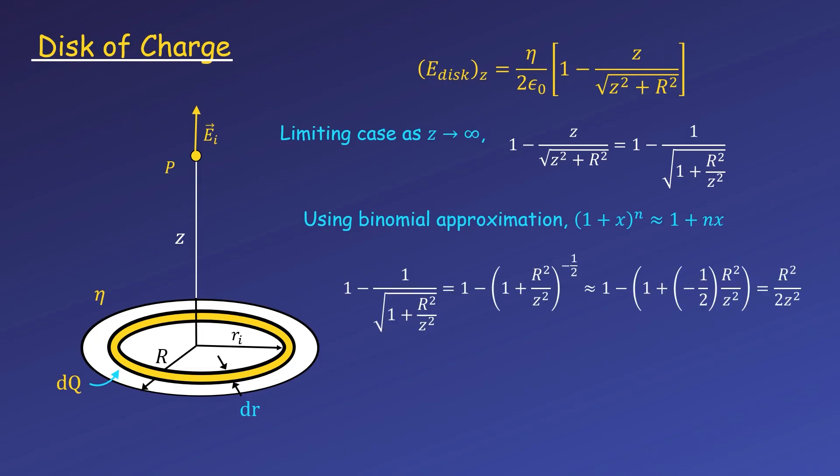It can be written as 1 plus a small number raised to the -1/2 power, so -1/2 is our value of n in this approximation. Plugging into this approximation and then solving, we get R² over 2z².